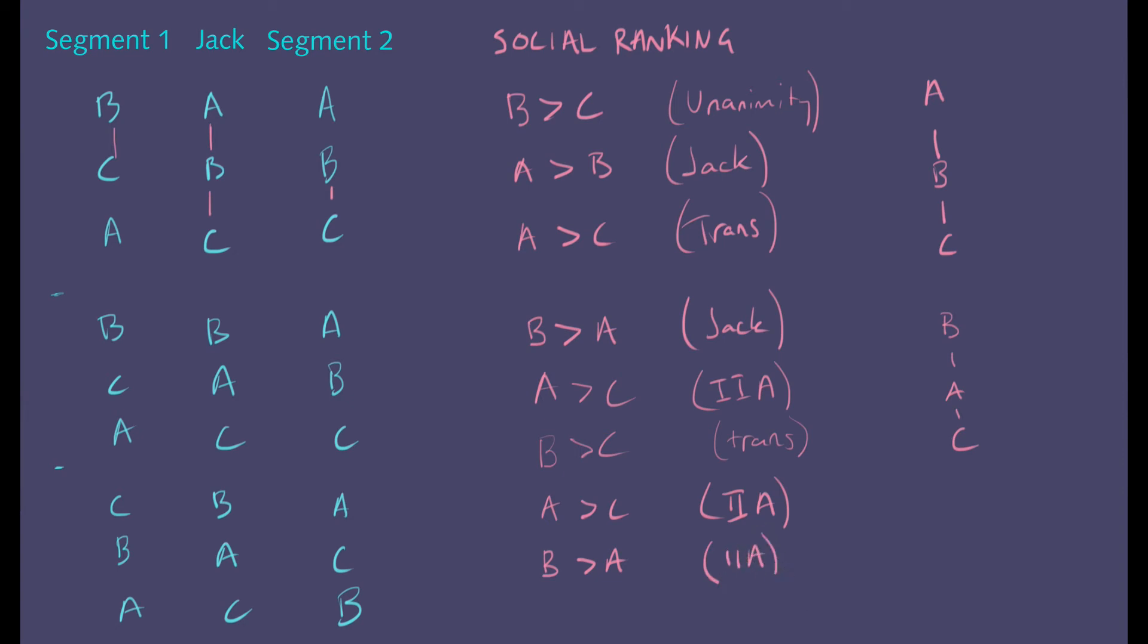And then you can use transitivity again. B is better than A, A is better than C, so we know B is going to be ranked better than C by transitivity. So what's our overall ranking? It's in fact the same as before: B beats A beats C. So you might think that's not such a problem as if it doesn't change from before. But now note what has happened here.